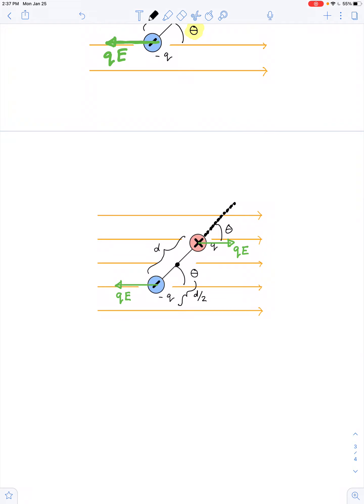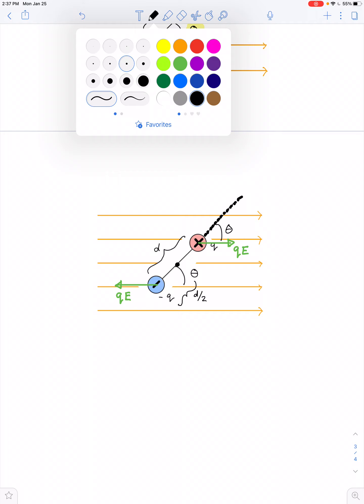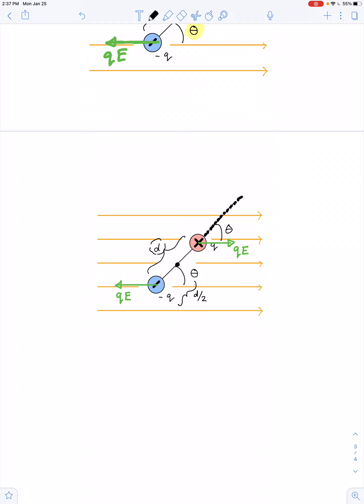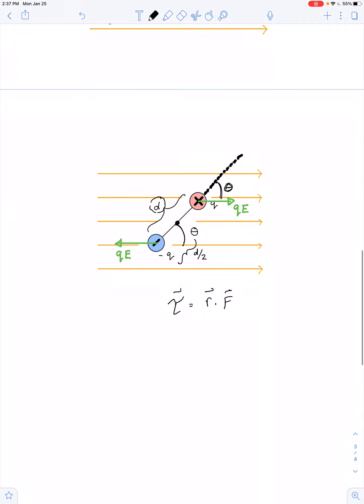So if we extend the direction of the vector D, and we can duplicate this angle theta, and we know how we calculate torque. Torque is the cross product between lever arm and force, so it's R cross F. So given that the axis of rotation is in the middle of the molecule, then we have a lever arm of D over 2. So there's the vector R. And we've got a force of QE, and then an angle of theta. So in magnitude, this is equal to D over 2 times QE times sine theta.